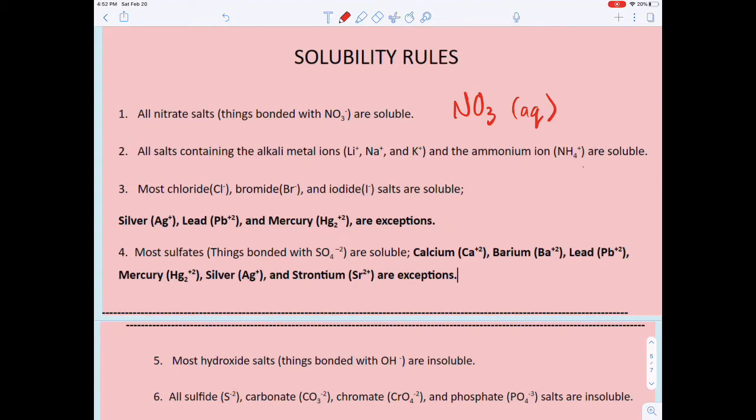Chloride, bromide, and iodide salts are soluble unless they're bonded to silver, lead, or mercury. So when it says exceptions, something like silver chloride would be insoluble or a solid. That's what it means by exceptions.